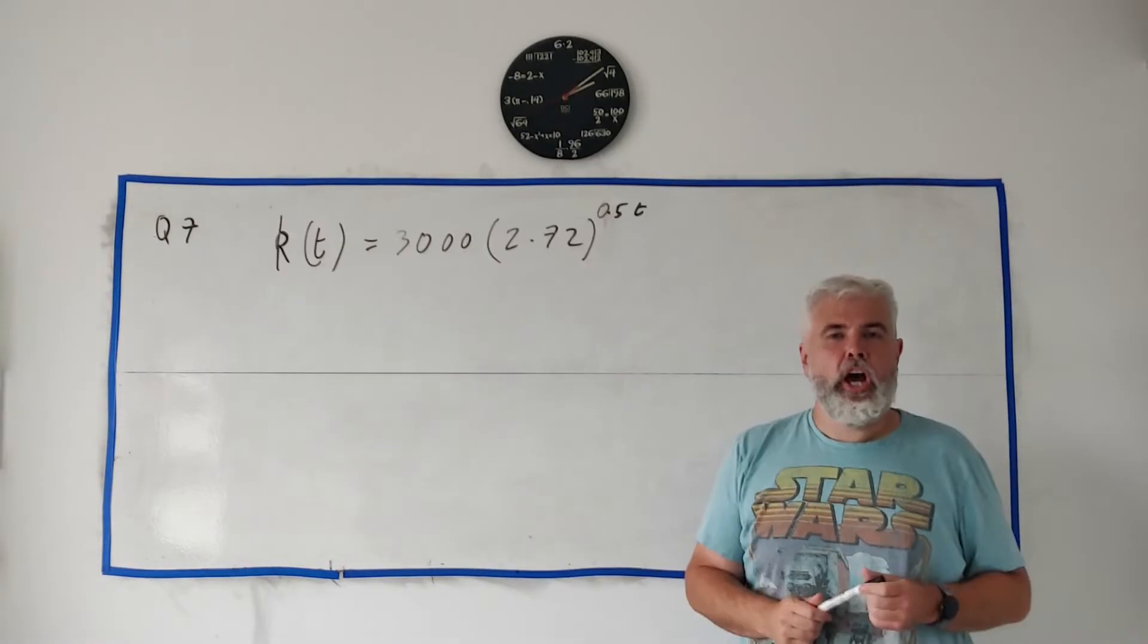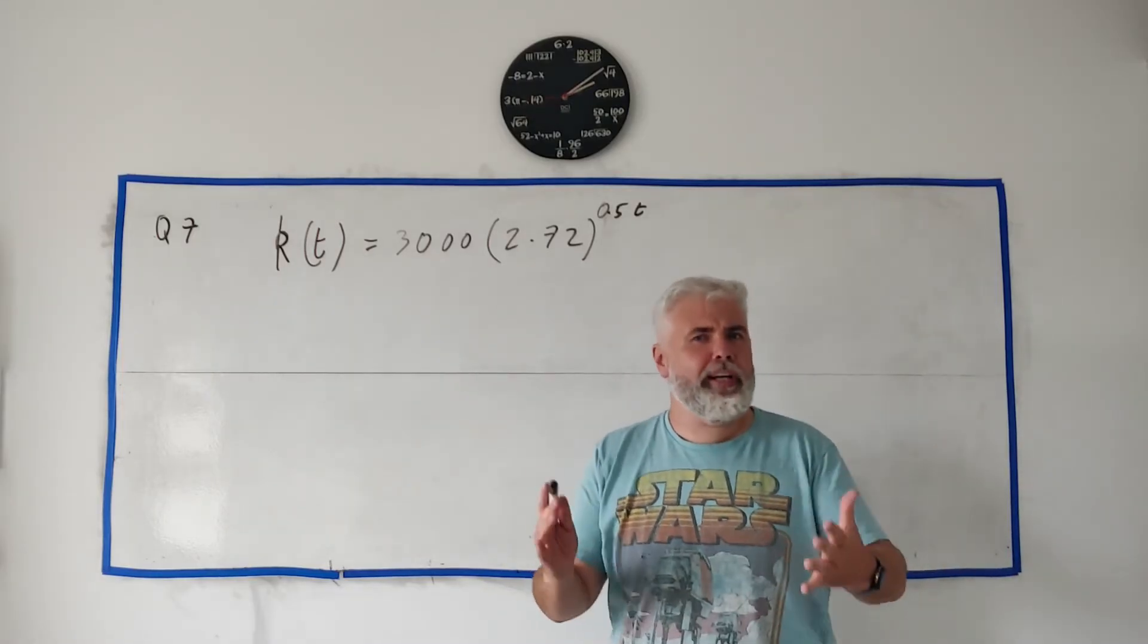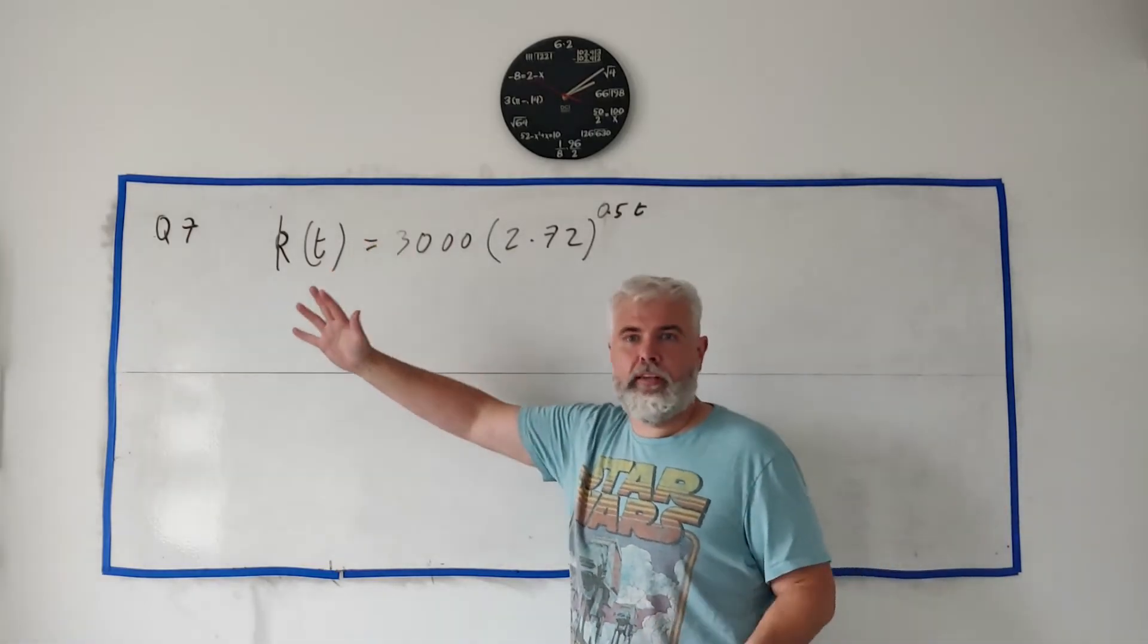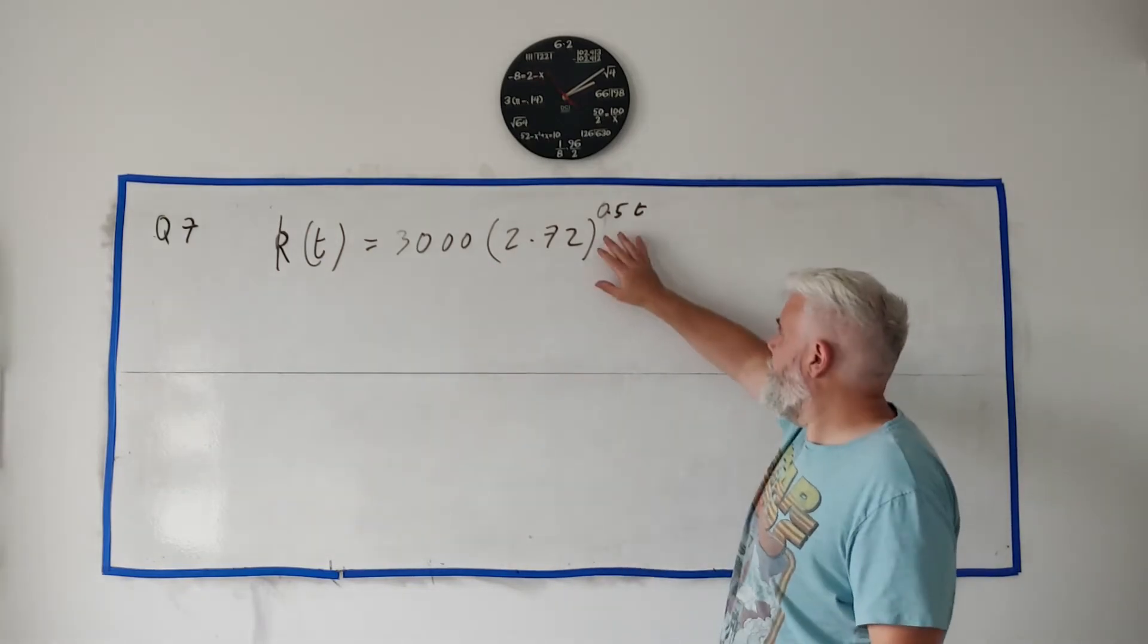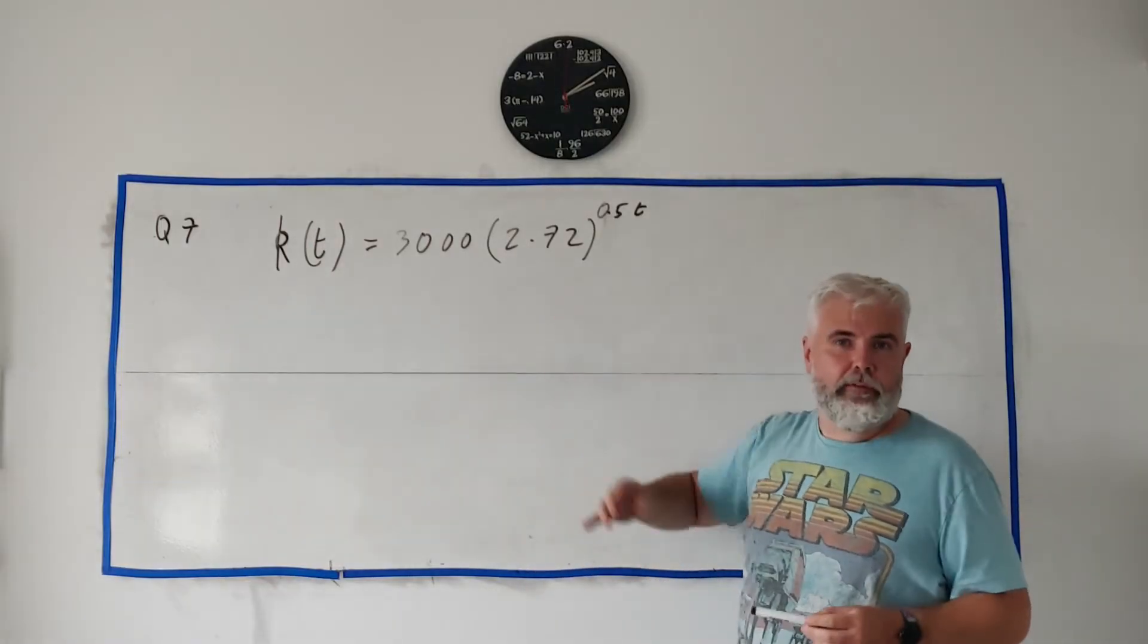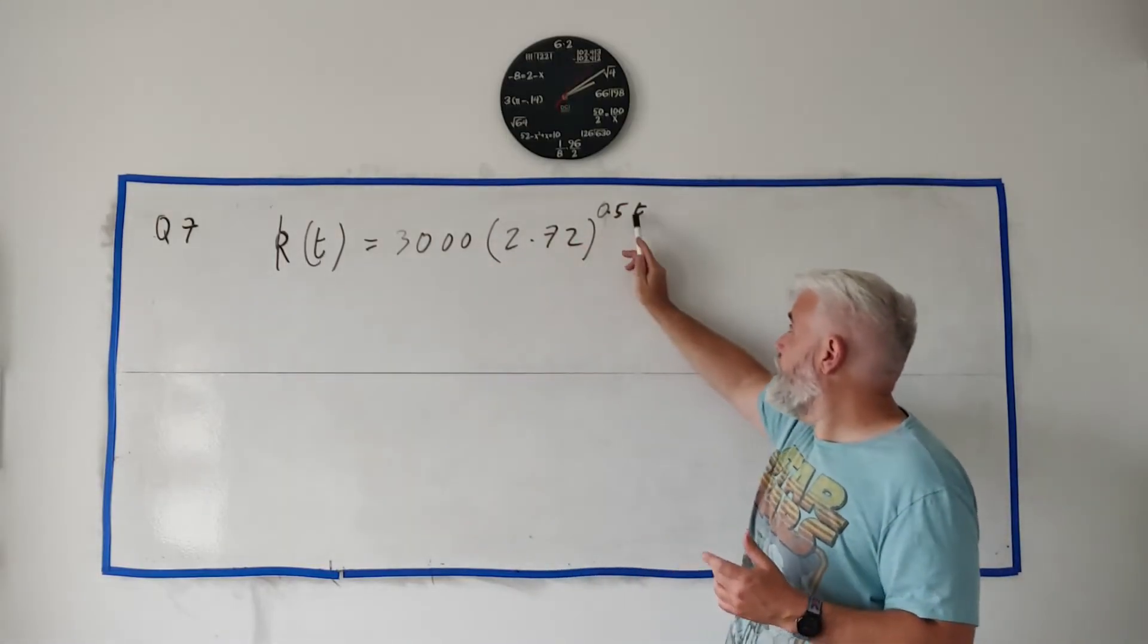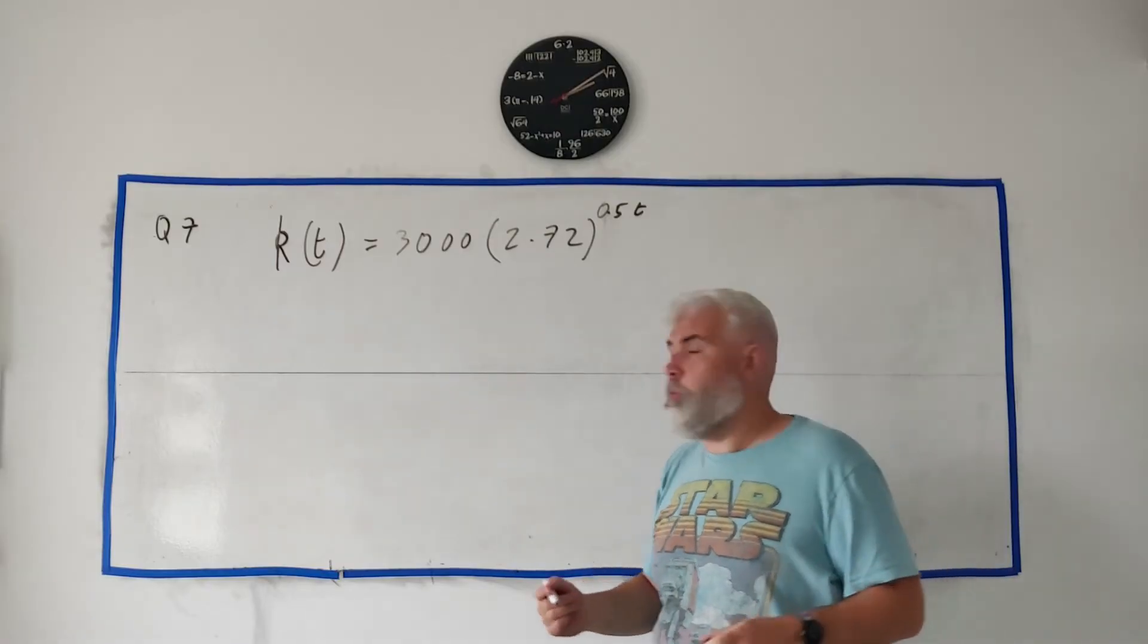In part b they tell us they're doing a different experiment, different bacteria, and they've modeled the growth of this bacteria with a different formula. In fact, this exponential formula would be more common for the growth of things. They give you this new formula: k(t) = 3000(2.72)^(0.5t). It works the same—we put numbers in for t and we get out answers.